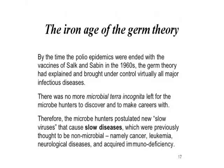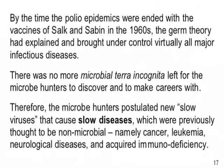By the time the polio epidemics were solved with the vaccines of Salk and Sabin, the germ theory had explained and partly controlled virtually all major human infectious diseases — not solved them all, but close enough. There was no microbiological terra incognita left for the microbe hunters to discover. And they were better equipped than any generation before in the history of mankind — thousands of them, trained at Harvard, MIT, Berkeley, Stanford — with lawyers, companies, everything. But they had no enemies.